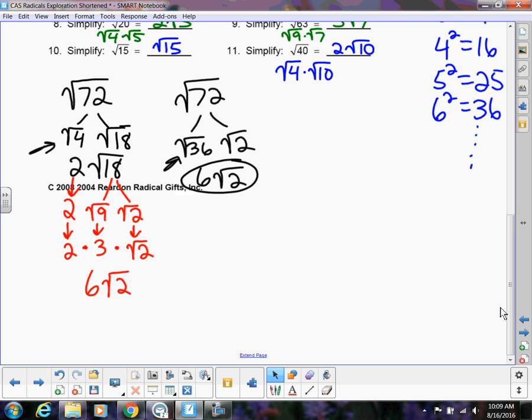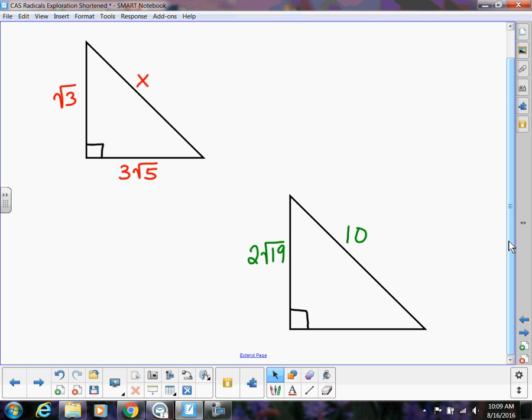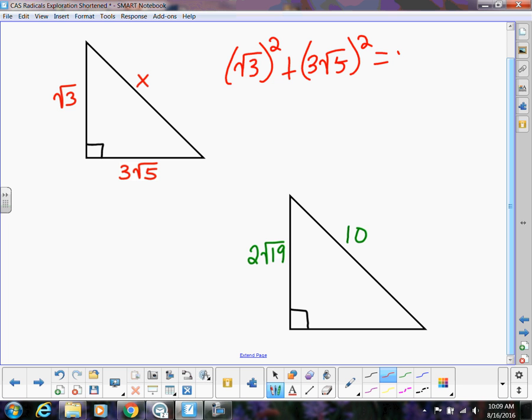Okay now the reason we are doing this in geometry is because when we've been doing the Pythagorean theorem, let's say I have something that looks like this and I'm trying to find the hypotenuse. All right so we know that we would do root 3 squared plus 3 root 5 squared equals x squared.